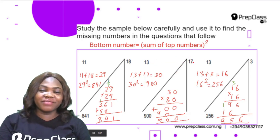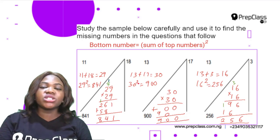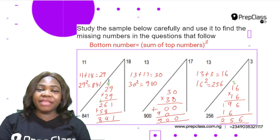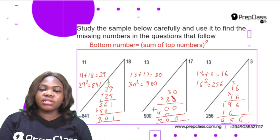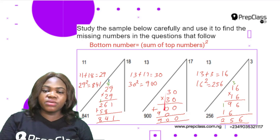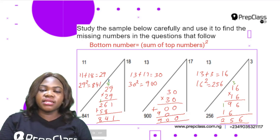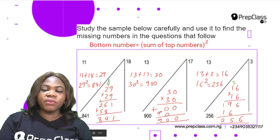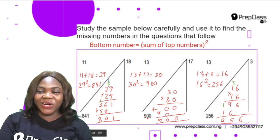Let's look at the second sample. The top numbers are 13 and 17; 13 plus 17 is 30. Now we do 30 squared, which is 30 multiplied by 30. 30 × 30 = 900. The bottom number is 900, confirming the pattern again.